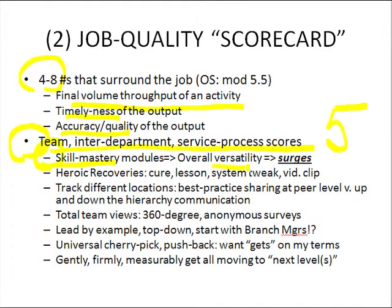Overall, versatility is important because we'll have surges. A service process is like a boa constrictor — all of a sudden a sheep or a small cow has to go through, creating a big bulge. So how do we have people downstream and upstream hop on that bulge and ride it through to make sure everything happens on a timely basis, perfectly done?